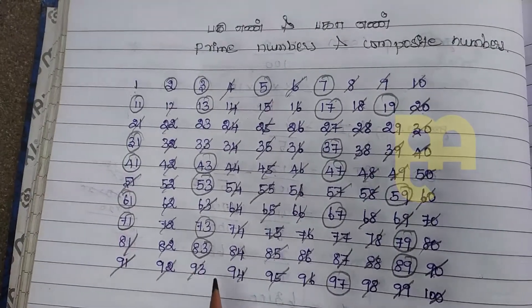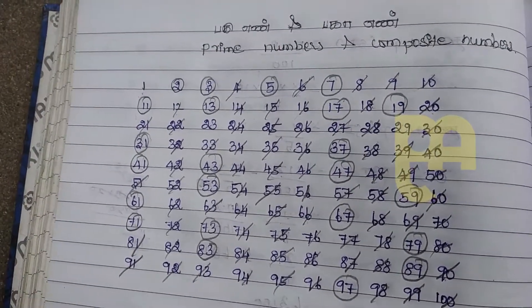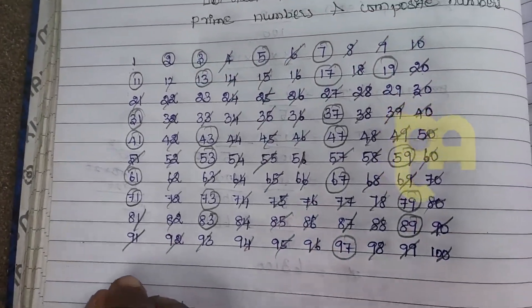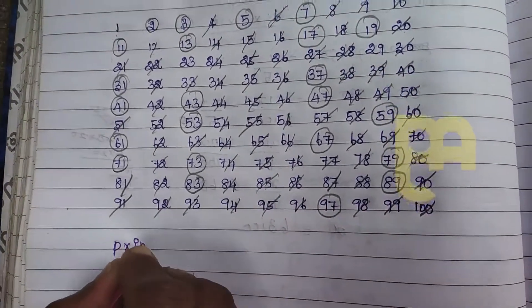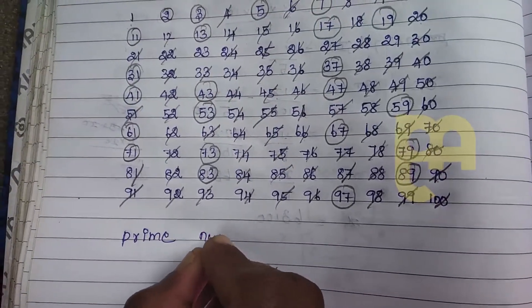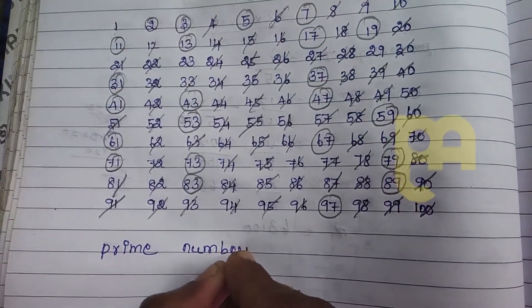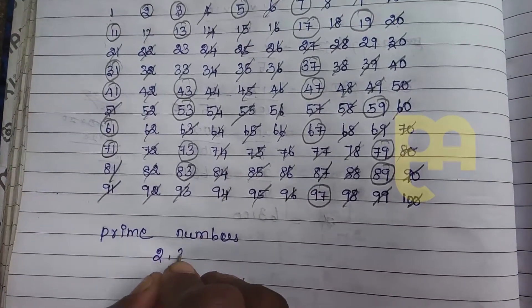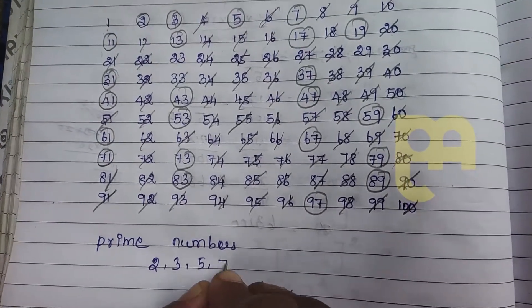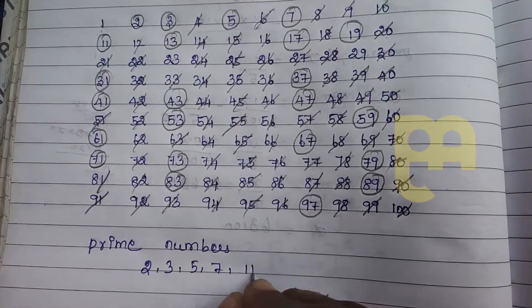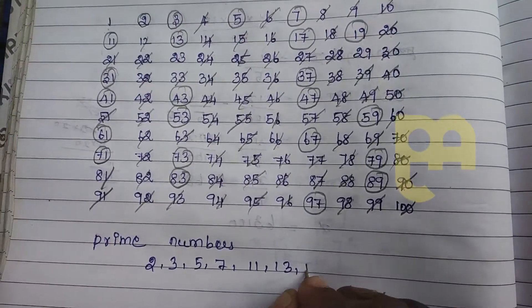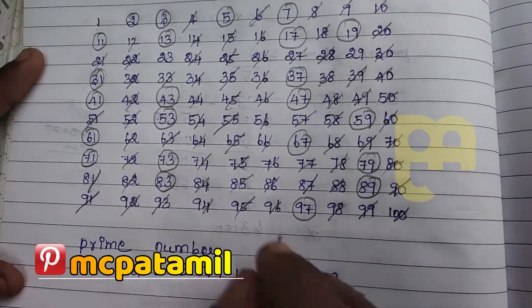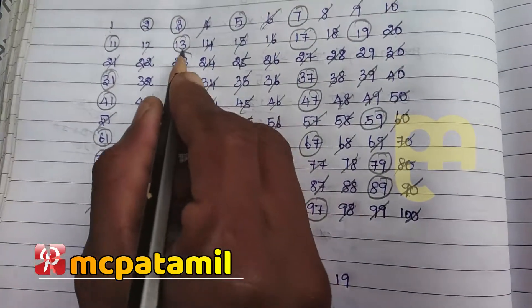Prime Number is 7. Prime Numbers. The positive prime numbers are 2, 3, 5, 7, 19, 13, 17. Now look, there's 22.